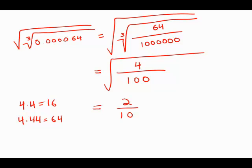We get the fraction 2 tenths, which we can write back as a decimal 0.2. And this is answer choice E.